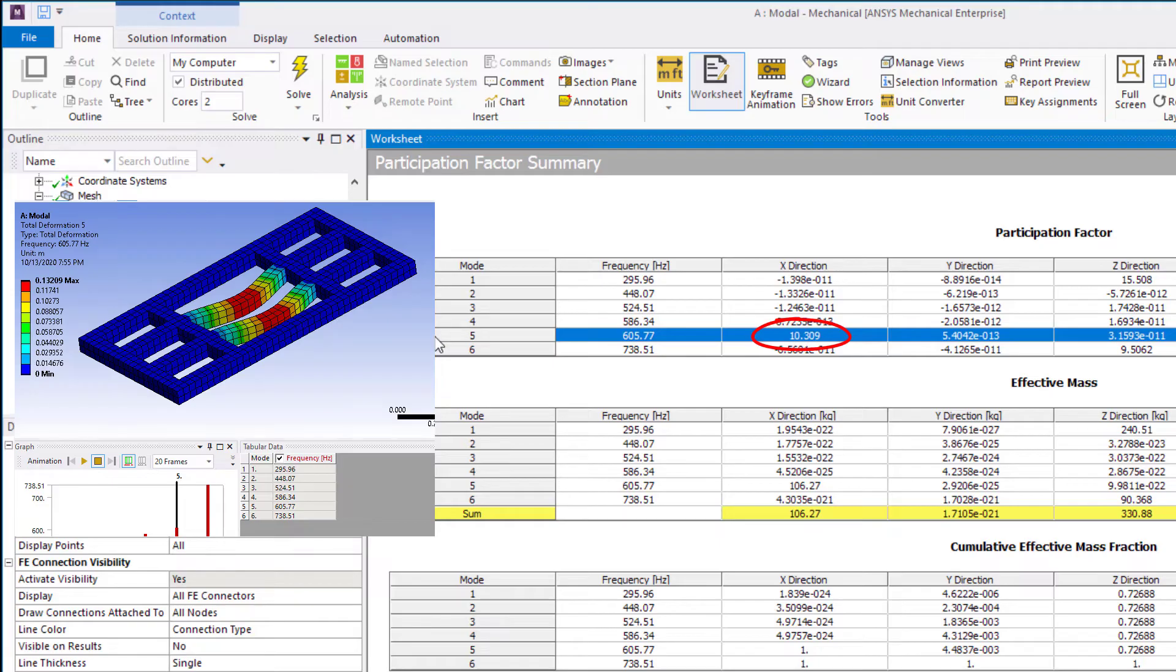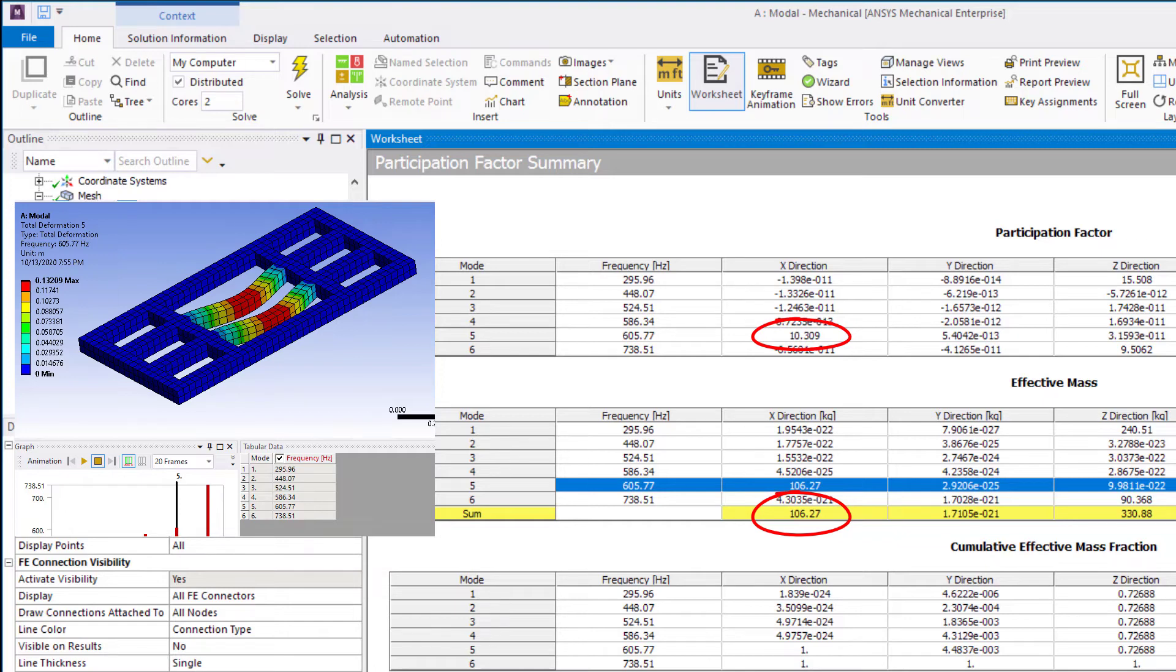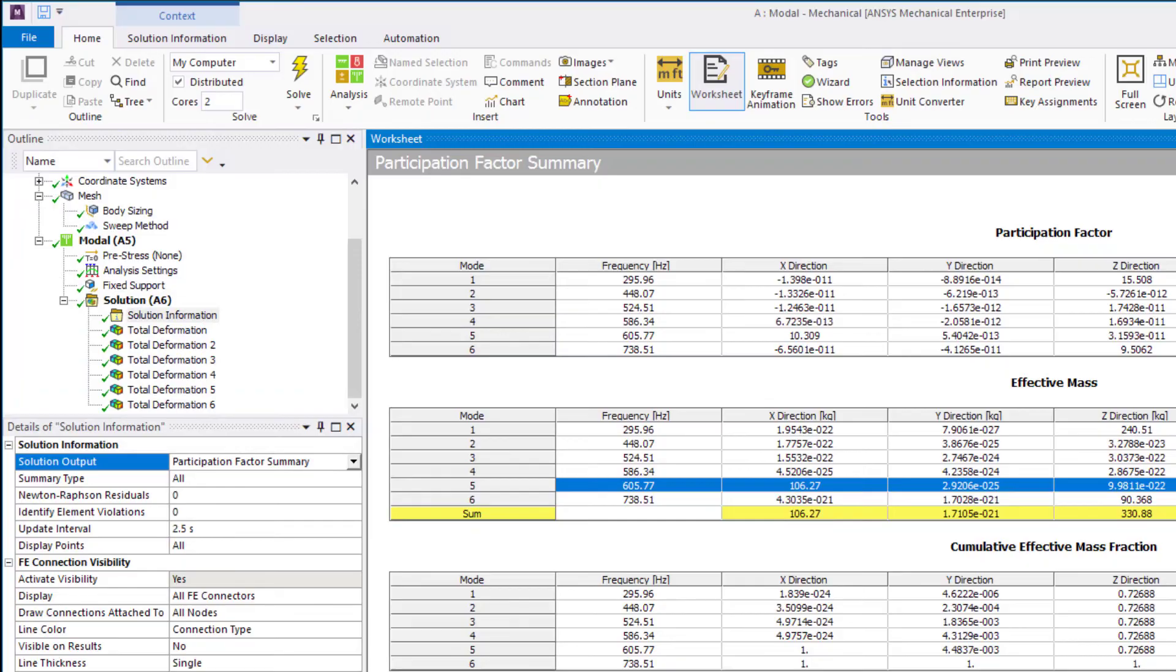Let's look at the effective mass. Effective mass is giving the amount of mass moving in a certain direction for a given mode. The value is higher for the more prominent modes.